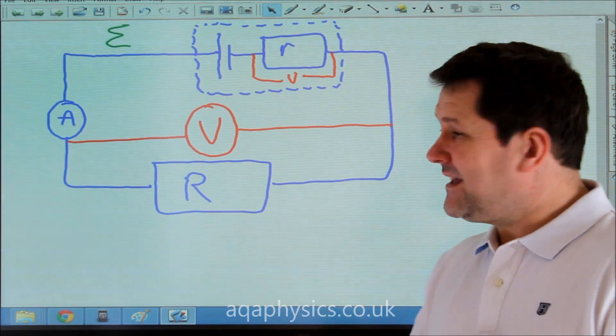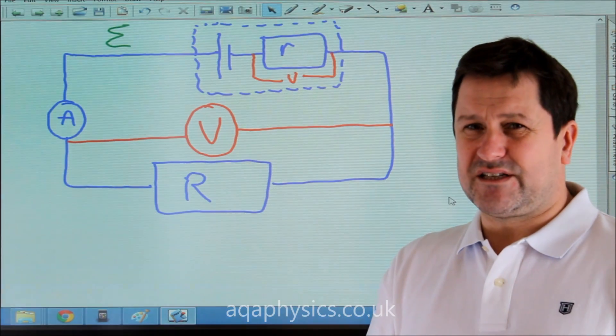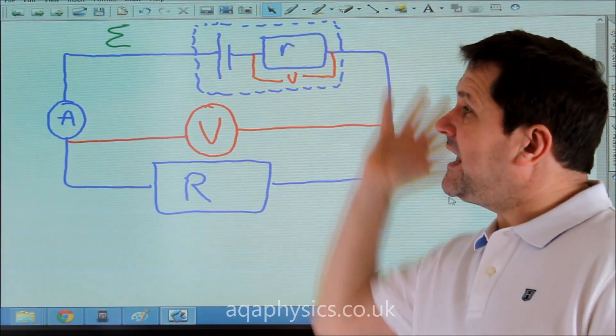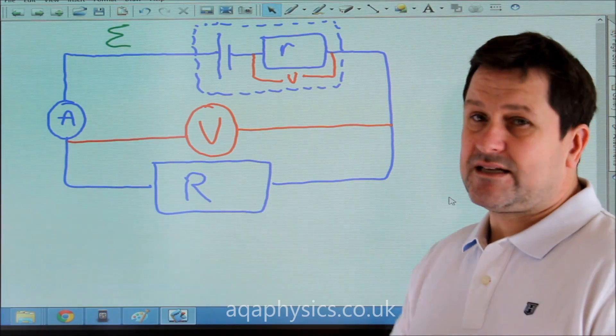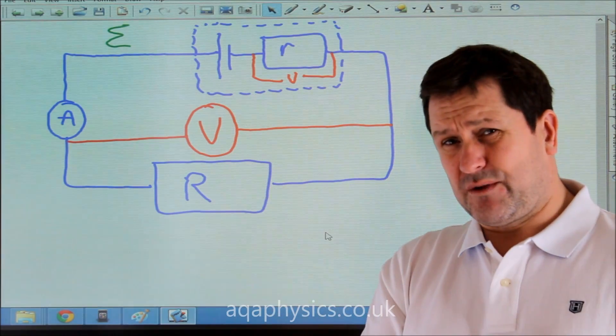If this load here was very, very high, it would have all of the potential difference, and therefore, the impact of the internal resistance is smaller. But in this circuit here, we can look at how we can calculate the different losses across the components.